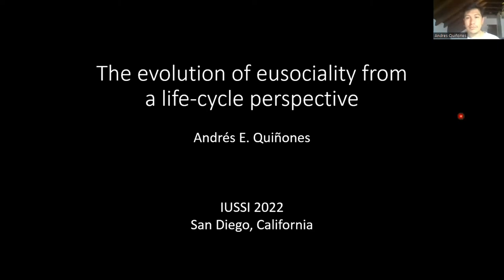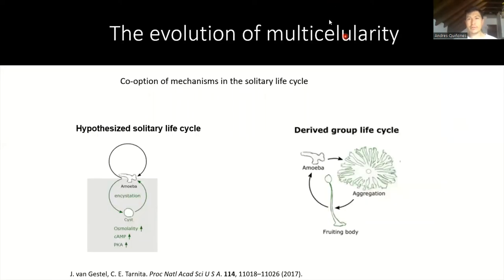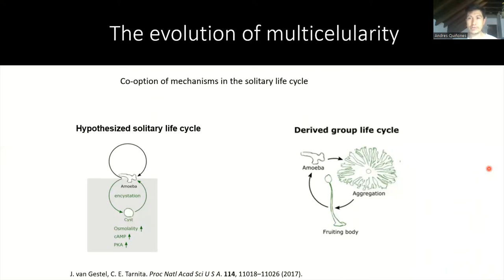Today I'm going to talk about the evolution of eusociality from a life cycle perspective. I'd like to start by talking about a different major transition: the evolutionary transition to multicellularity. Parallels between multicellularity and eusociality have been drawn before to understand the evolutionary process. I'd like to emphasize the perspective proposed by two authors, who argue that it is important to understand the life cycles of the solitary or single-celled ancestors in order to understand the evolution of multicellularity.